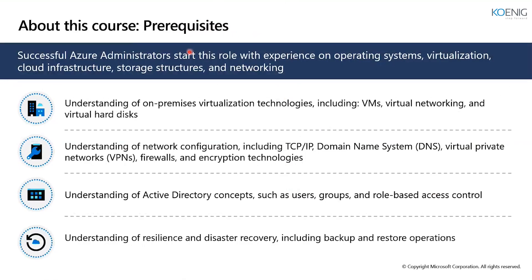This course has prerequisites — it is not something we start from scratch. It's an associate-level course, and since you're working in an IT environment, you should have a basic understanding of on-premises virtualization technology, including how VMs, virtual networks, and virtual hard disks work; network configuration including TCP/IP, DNS, VPNs, firewalls, and encryption; Active Directory concepts such as creating users, managing groups, and role-based access control; and resiliency and disaster recovery including backup and restore operations.